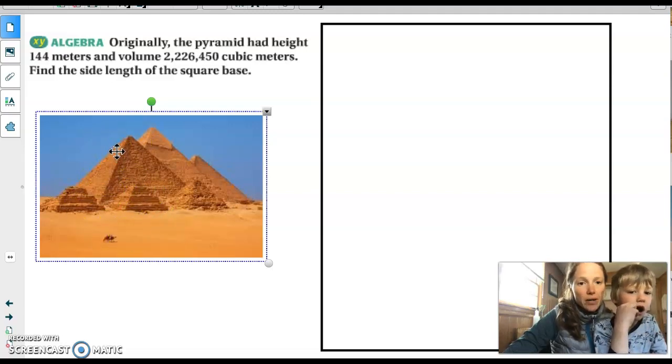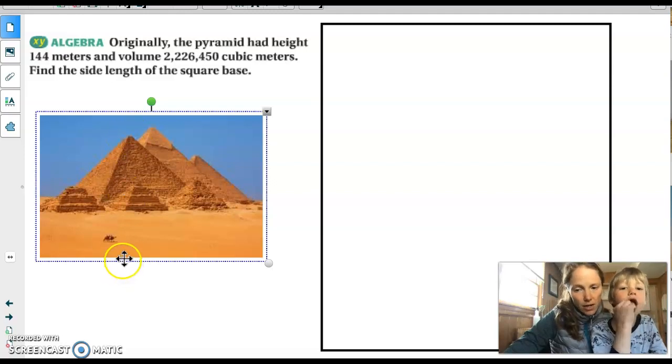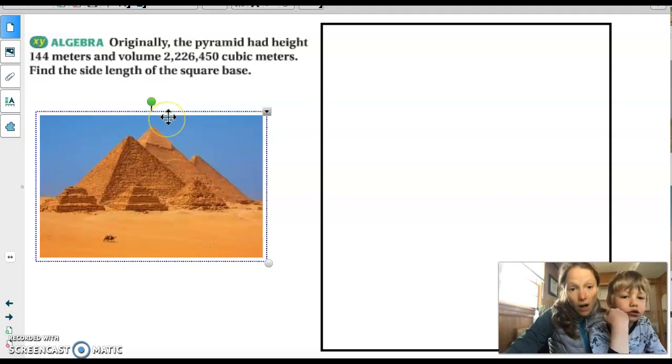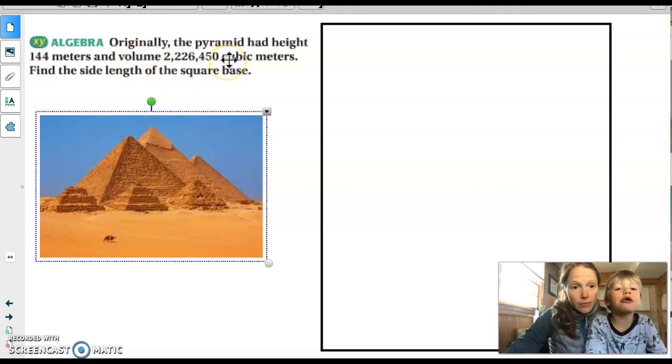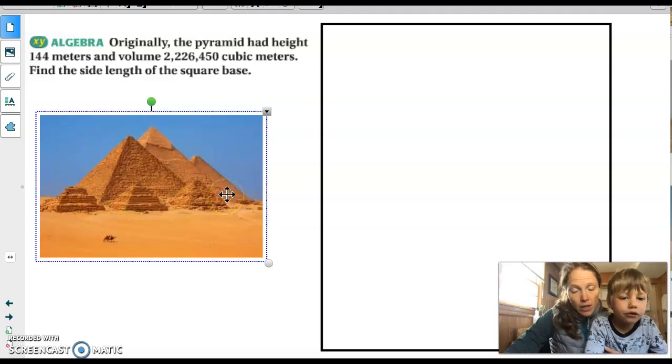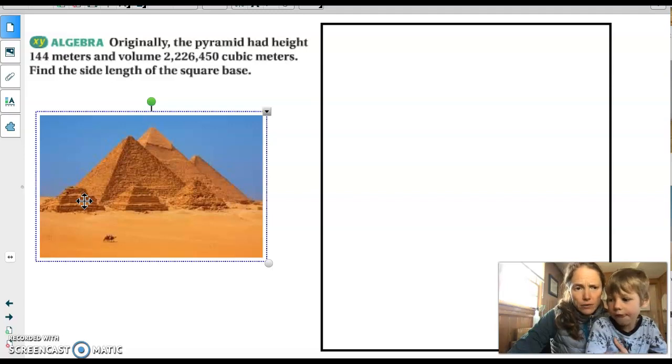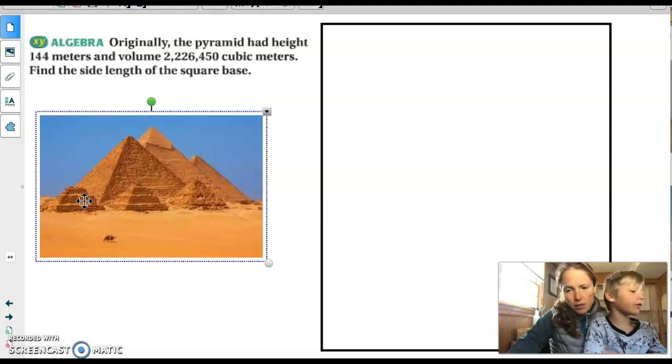And then they've got these four triangular sides. And so if we think about a pyramid that had a height of 144 meters, so from the tip of the pyramid straight down into the center of the pyramid, that height is 144 meters. And it has a volume of over 2 million cubic meters. So we want to try to figure out how long is one side of the pyramid, knowing that it's a square base. So we know that this side length and the side length back here would be the same. So take a minute and see if you can figure that out.